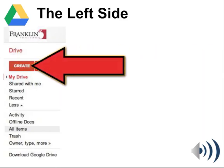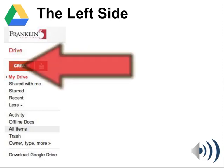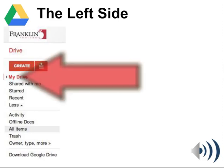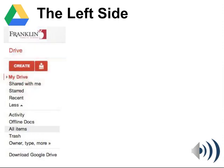The left side of Google Drive is how you navigate around and create files. The Create button is where you'll create files or folders. The My Drive choice, when selected, shows that it's red and will show any files or folders that you've created or organized.